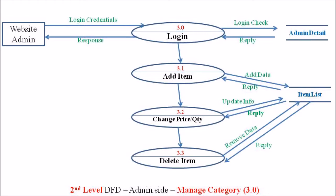When it comes to the level 2 DFD of the manage item process, for every process the admin has to log in. The first sub-process in each individual process is the login process, where the admin enters login credentials. These credentials are verified against the database admin details and a reply is given to the admin. If the credentials are correct, the second process — add item — is initiated. In this add item process the admin can add or update new data, and these changes are reflected in the database item list. The updated item list is then reflected in the website and the admin should verify the new data in the website too.